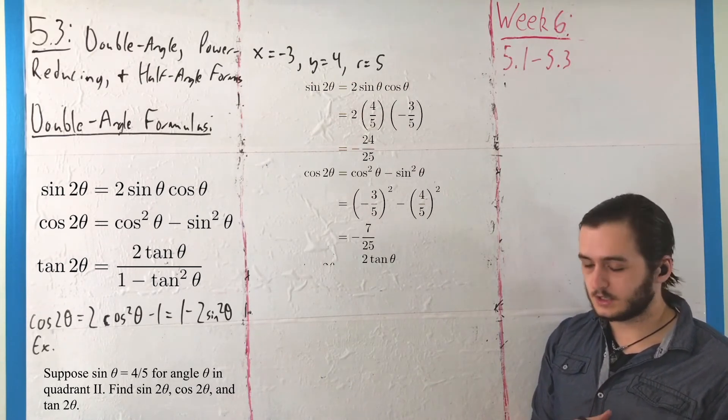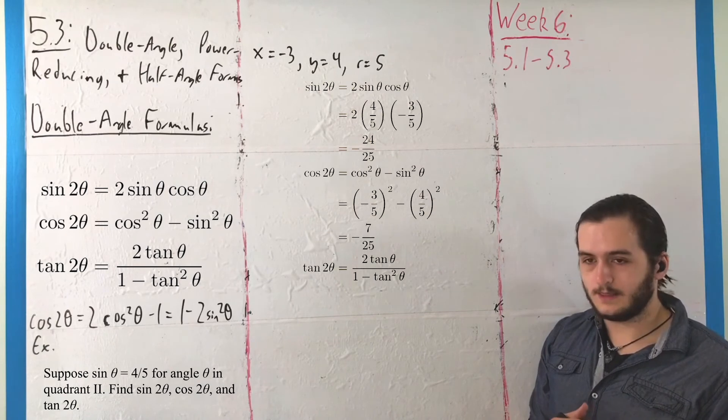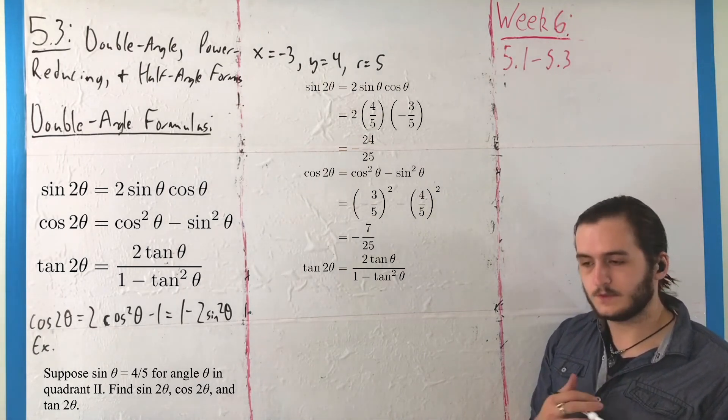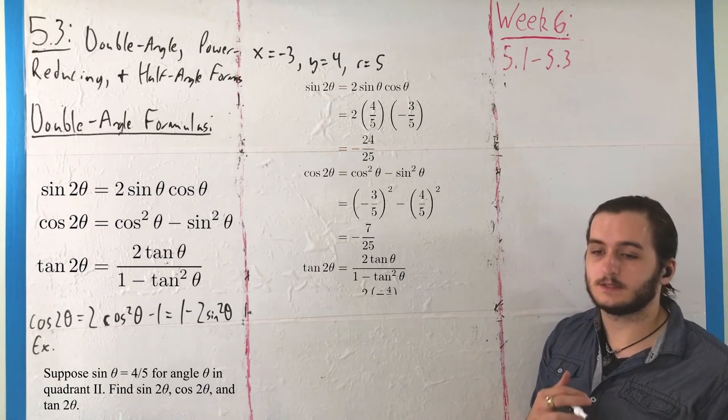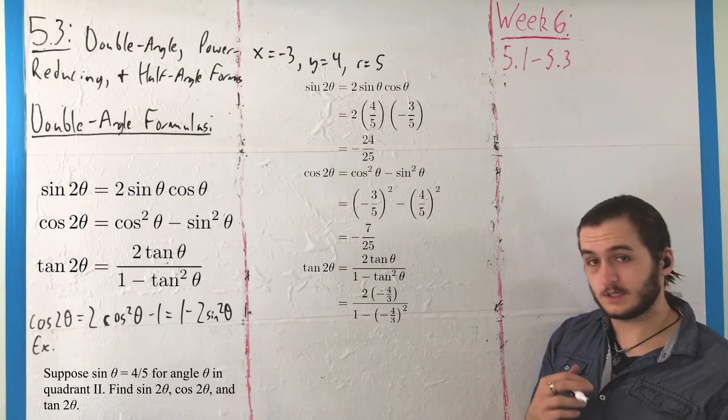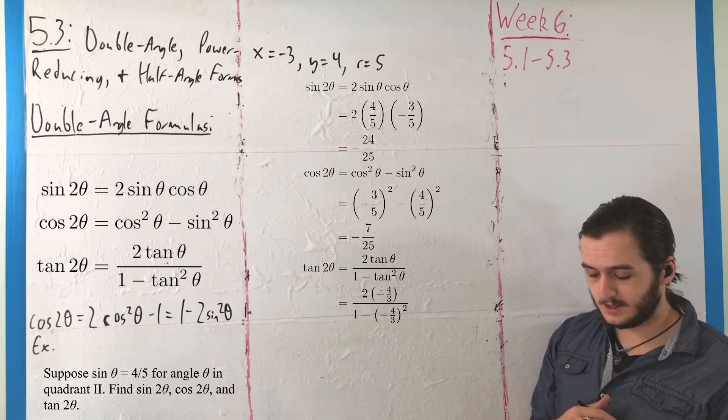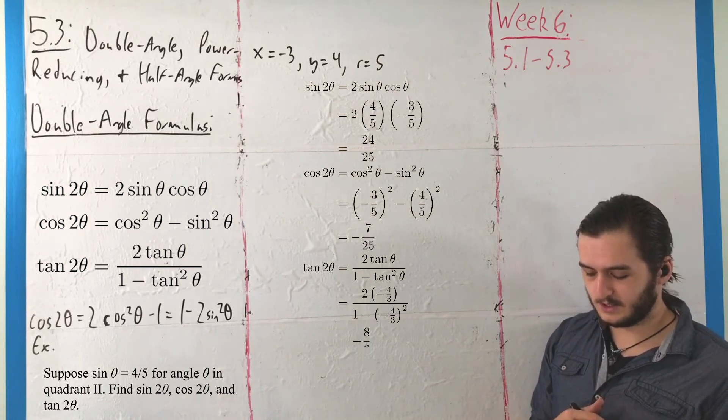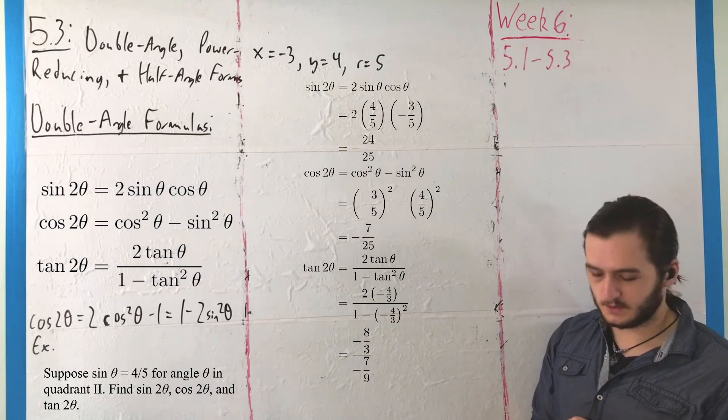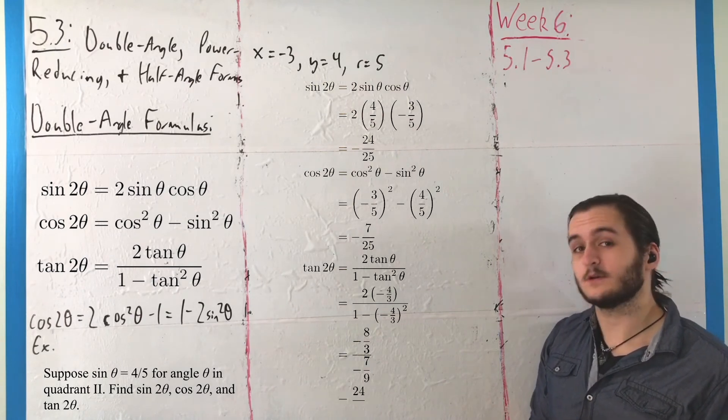Finally, for tangent of 2θ, we write it as 2 tangent over 1 minus tangent squared. We get 2 times negative 4/3 over 1 minus negative 4/3 squared, giving us negative 8/3 over negative 7/9. Simplify by flipping, and you get 24/7.